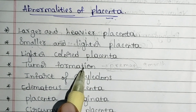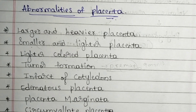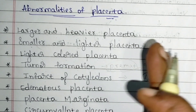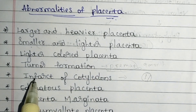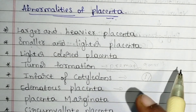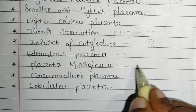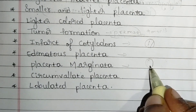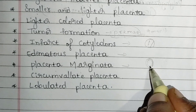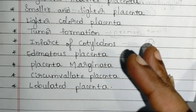Next, infarct of cotyledons — there are many lines and cuttings seen in the placenta, and that is infarct of cotyledons. Next, edematous placenta — this placenta is swollen. Next, placenta marginata — here, a ring-like structure is formed on the margin side of the placenta, which blocks the supply of blood from the fetus to the mother.